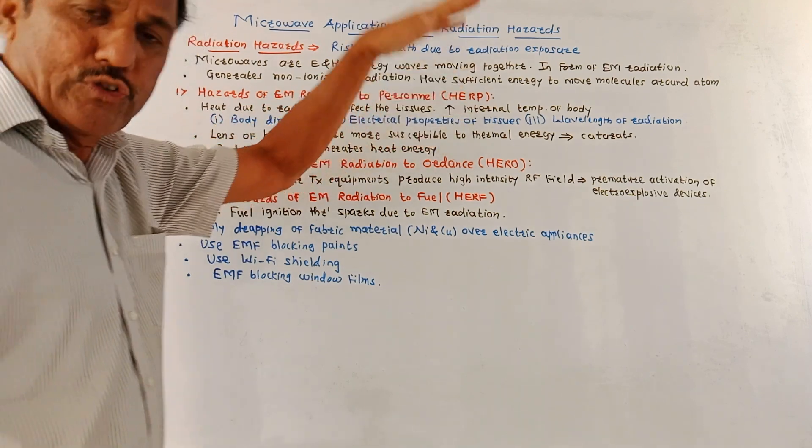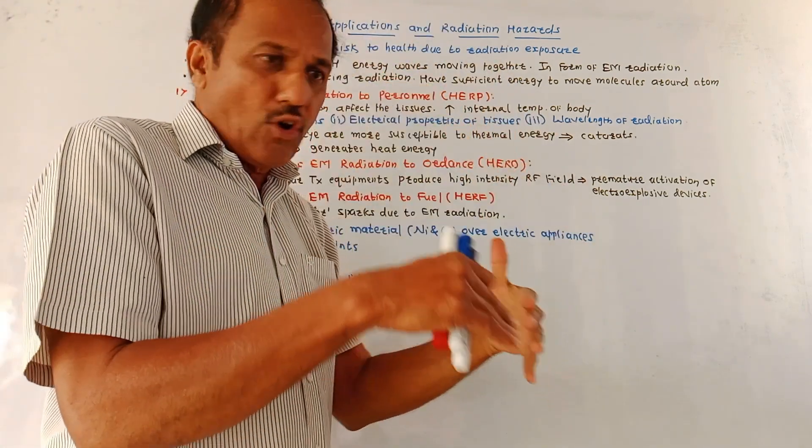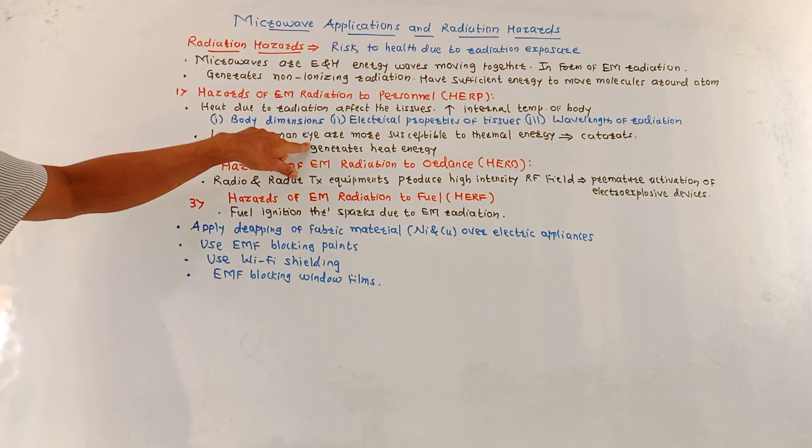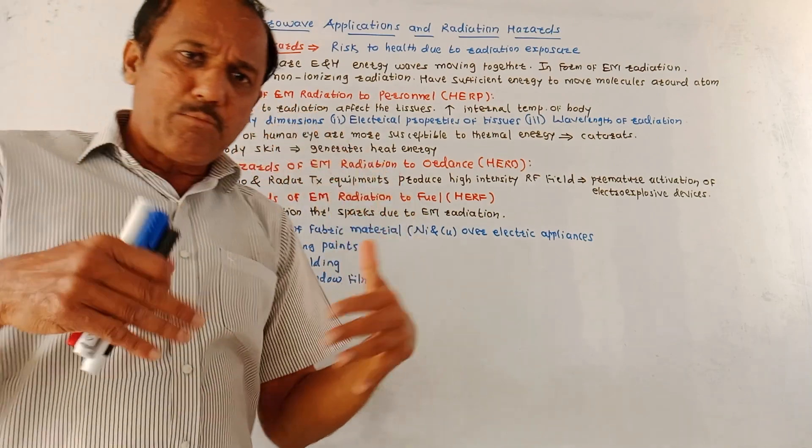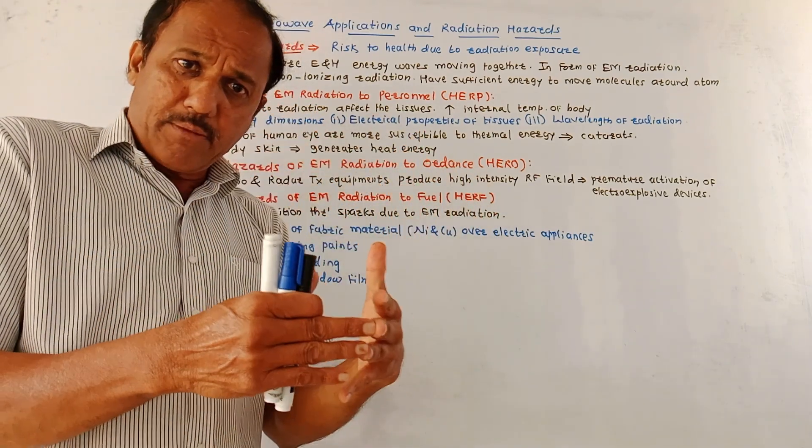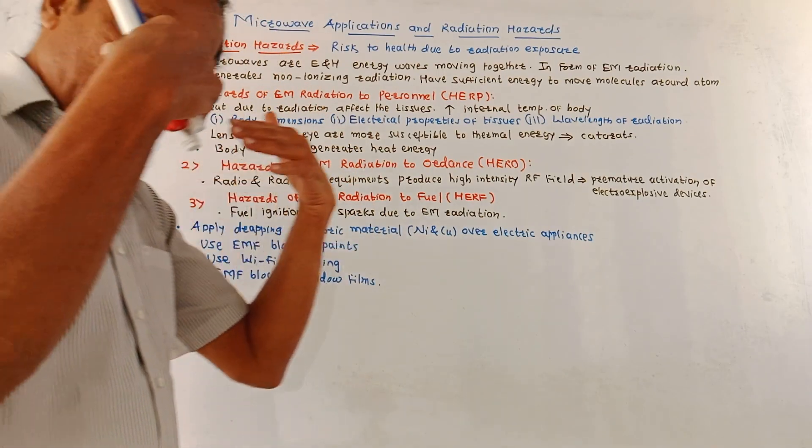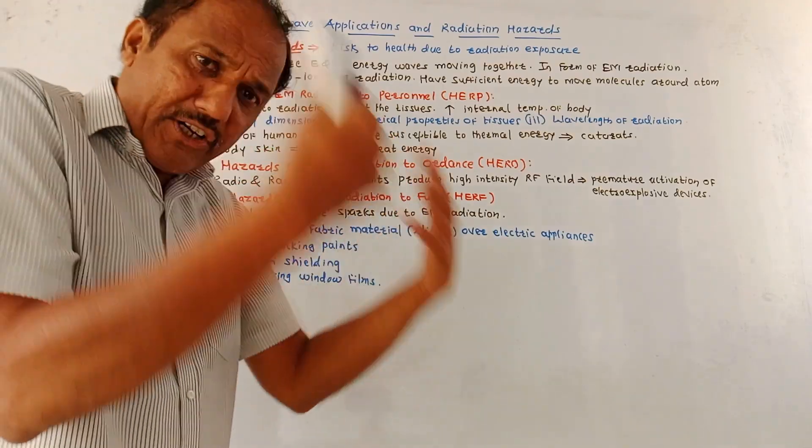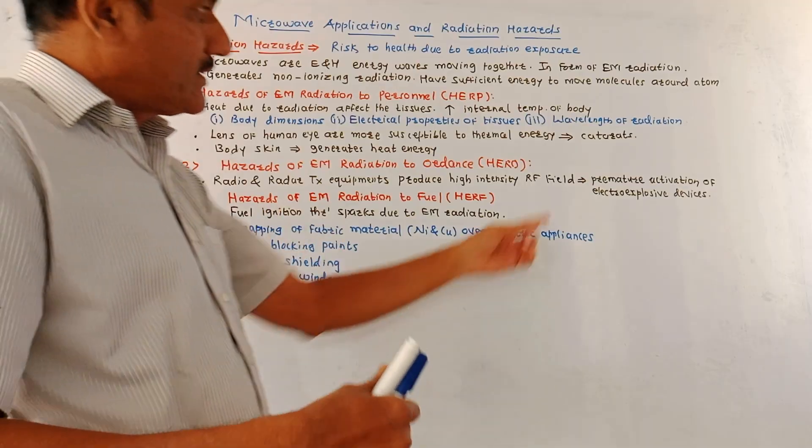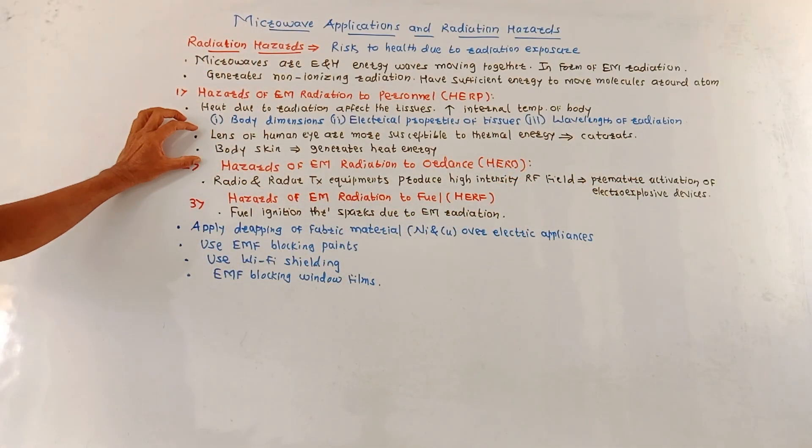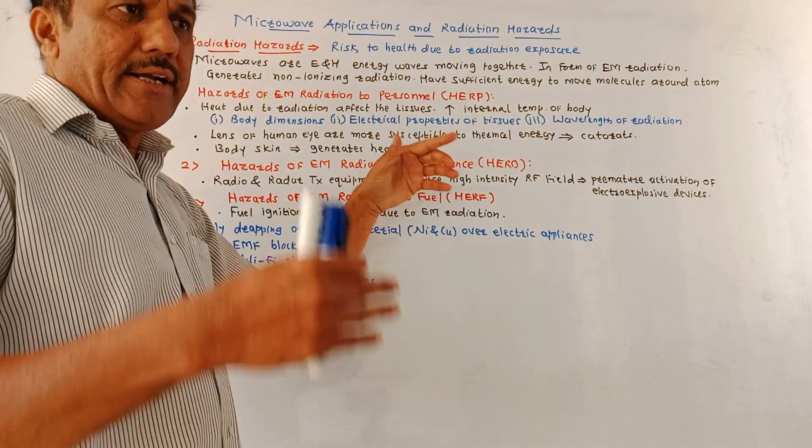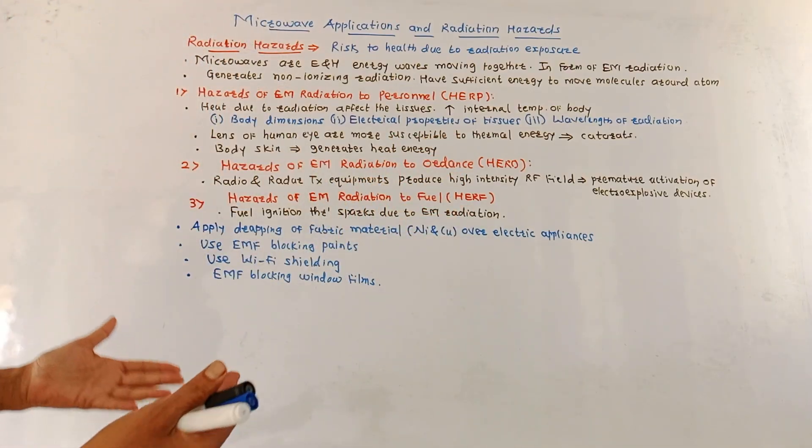Another important part apart from tissues is the lens of human eye. Actually lens are more susceptible to the thermal energy. Because of this thermal energy or radiation, it may happen that there is a certain permanent effect as far as this lens is concerned. It may cause cataract. Body skin is also getting affected due to exposure to the radiation. It generates heat energy and in extreme cases, it may damage or burn the skin.